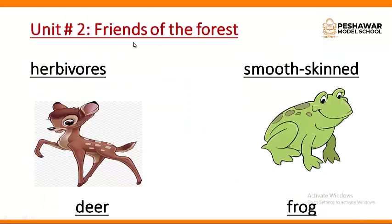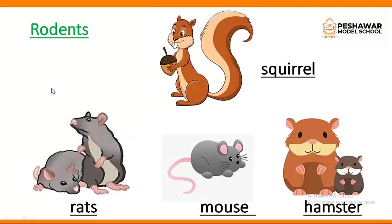In this chapter, we are going to study many new terms. For example, herbivores and smooth skin. Herbivores are those animals which eat plants or leaves — they do not eat meat. An example of herbivores is the deer. A frog is a smooth skin creature. Then rodents — examples of rodents are squirrel, rats, mouse, and hamster. We are going to study about rodents in this chapter.